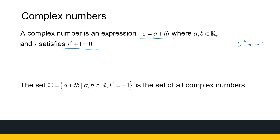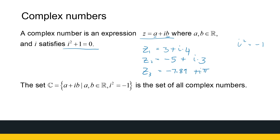Some examples of complex numbers: z1 equals 3 plus i times 4; another one, z2 equals minus 5 plus i times 3. Those a and b values don't necessarily have to be integers — they can be any real number. So it can be minus 7.89 plus pi times i. Those are all examples of complex numbers, and you can generate many more. The whole set of complex numbers is the set of numbers that can be written in the form a plus ib, where a and b are real numbers and i squared equals minus one.